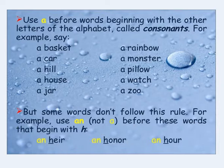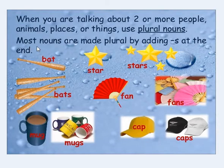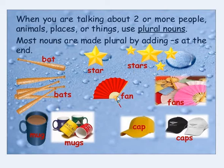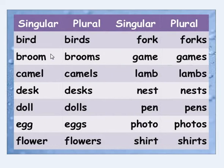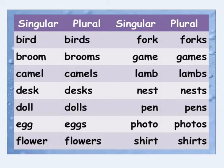When you are talking about two or more people, animals, places, or things, use a plural noun. Most nouns are made plural by adding -s at the end. For example: bat/bats, star/stars, fan/fans, mug/mugs, cup/cups, bird/birds, broom/brooms, camel/camels, desk/desks, doll/dolls, egg/eggs, flower/flowers, fork/forks, game/games, lamb/lambs, nest/nests, pen/pens, photo/photos, shirt/shirts.